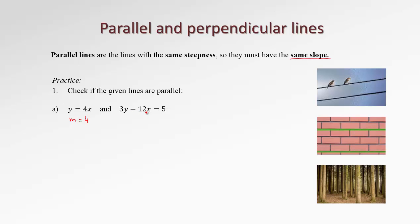How do we find the slope of the line represented by the second equation? This equation is given nearly in standard form, but not exactly, because standard form must start with x, not y. So let's rewrite it in standard form. That could be written as negative 12x plus 3y equals 5. We would also like to start with a positive number, so we change all signs and end up with 12x minus 3y equals negative 5.